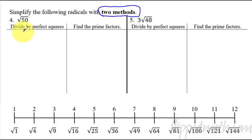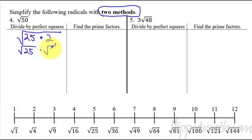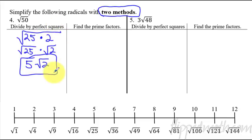Alright, so Method 1: divide by a perfect square. We want to take radical 50 and break it up into two numbers, one of which is a perfect square. Looking at 50 — can 49 go into 50? No. Can 36? No. Can 25? Yes. 25 divides perfectly into 50 twice, so 25 times 2 is 50. Now we separate the radical: radical 25 times radical 2. The square root of 25 is 5, and you still have square root of 2. That is the answer. If you can recognize the perfect square, this way is really fast.